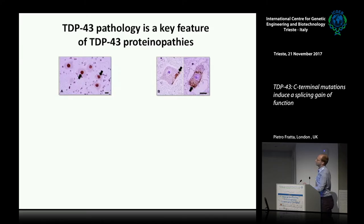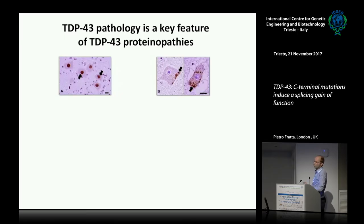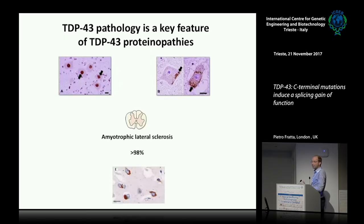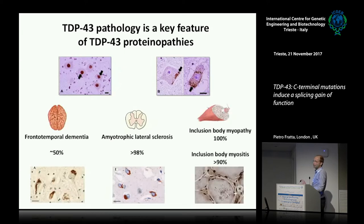Without going into the detail Ian McKenzie covered yesterday on TDP-43 pathology, the key point is that although TDP-43 is not exclusively nuclear normally, in immunohistochemistry you really see it mostly in the nucleus. In disease, two things happen: it's depleted from the nucleus, and it accumulates in different forms of inclusions in the cytoplasm. This happens in nearly all ALS patients, in a significant part of FTD, and also in atypical muscle diseases like inclusion body myositis and inclusion body myopathy.